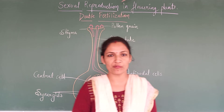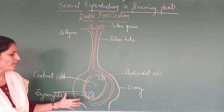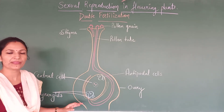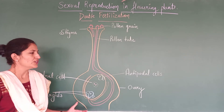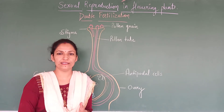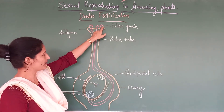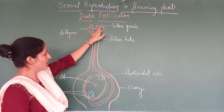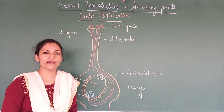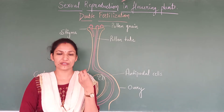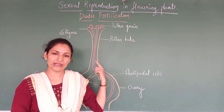So as we were talking about the flowering plant, we have taken the pistil part of it. This is the pistil, carpel, or we can call it as gynoecium — the female reproductive part. So during the pollination, pollen grains are going to be transferred from the anther to the stigma. So now they have landed over here on the stigma of the pistil. This stigma is moist and sticky; it will provide nourishment to grow that pollen.